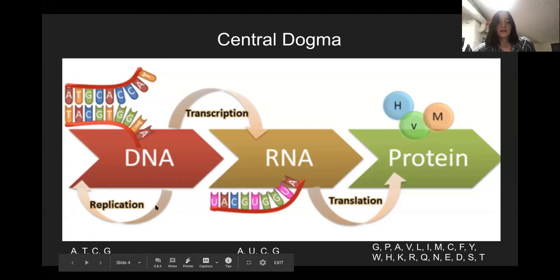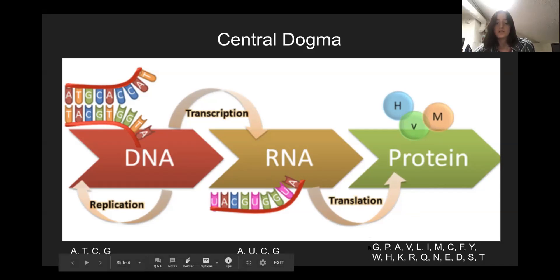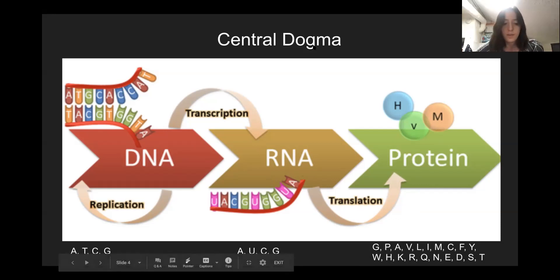The DNA is transcribed into RNA, where the language is A, U, C, G — the RNA bases. They're the same as DNA except T is switched to U, giving single-stranded RNA. This RNA is then translated into a protein with amino acids, using the single-letter codes for all 20 amino acids that can make up proteins. This is a broader review of the information flow.